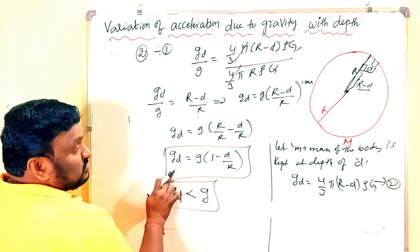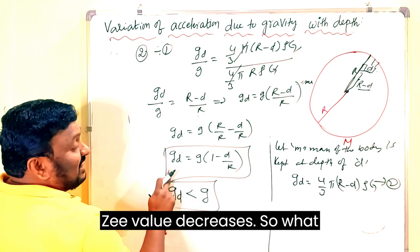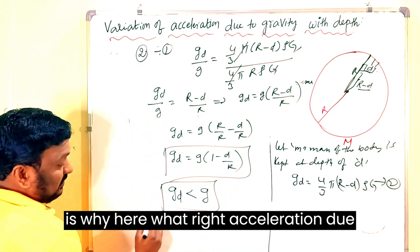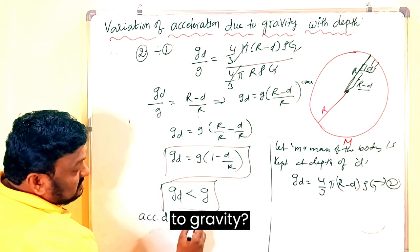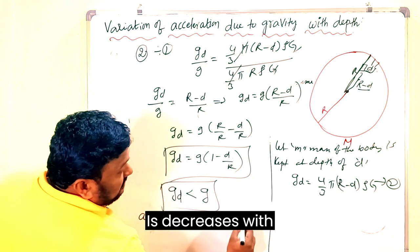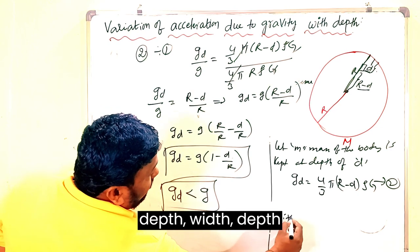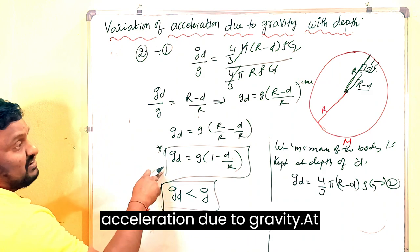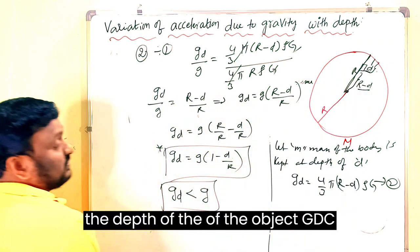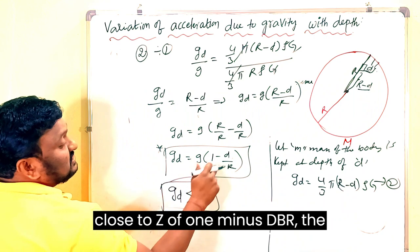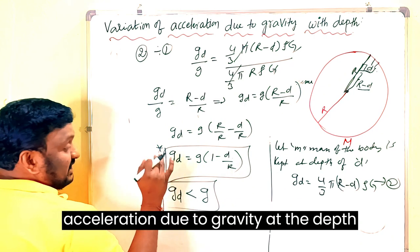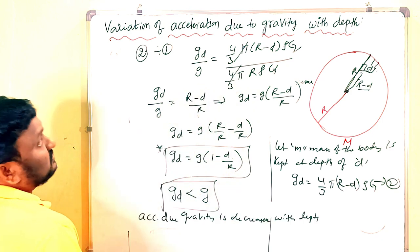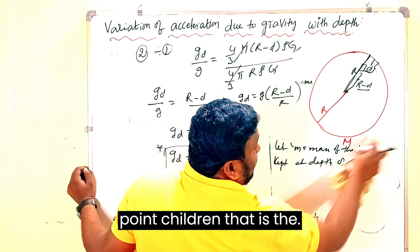From this equation, we conclude that with respect to depth, the value of g decreases. We see that gd is proportional to (1 − d/R), confirming that acceleration due to gravity decreases with depth. The formula gd = g(1 − d/R) gives the acceleration due to gravity at depth d, and it is always less than the acceleration due to gravity on the Earth's surface.